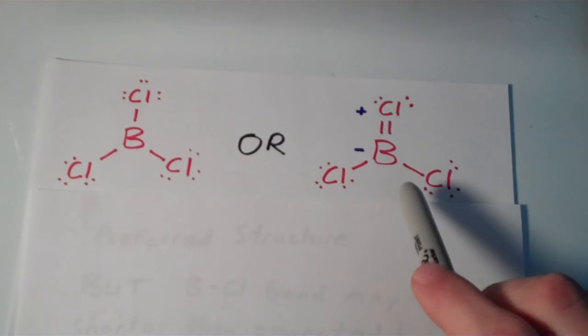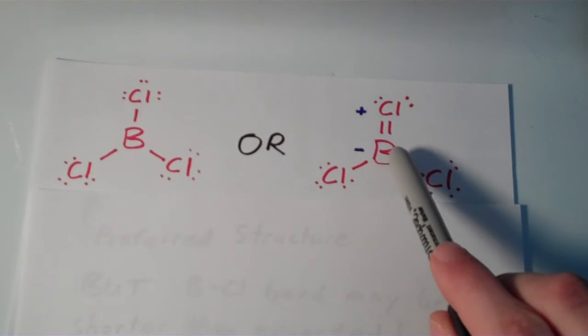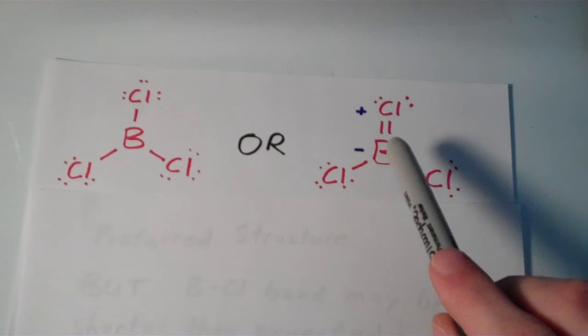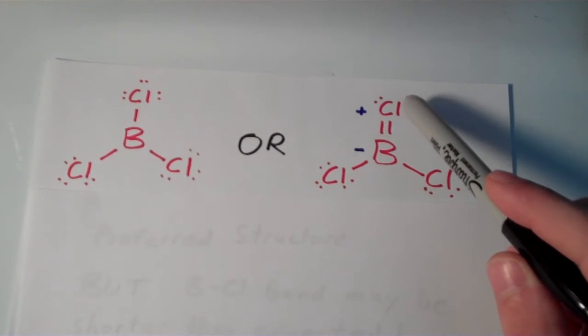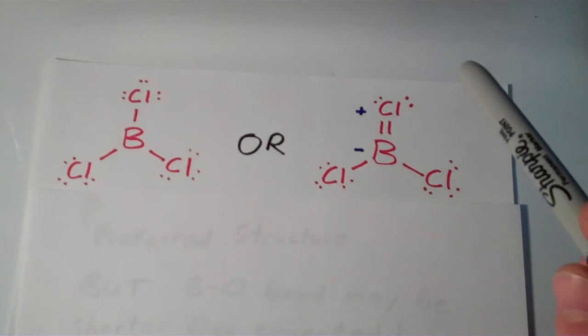In giving boron an octet, we've actually given the boron atom a formal negative charge and we've given the chlorine atom a formal positive charge.